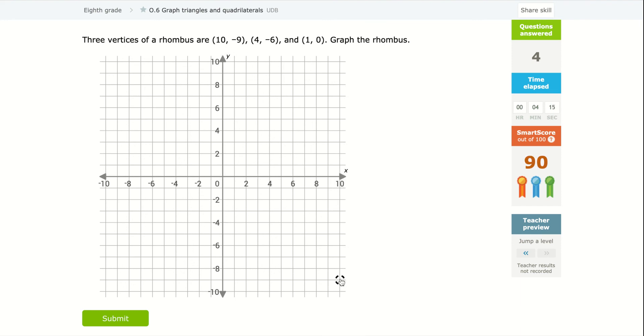(10, -9). So 10 down to negative nine. I got (4, -6). I'm going to go out four down to negative six. Then I'm going to go to (1, 0). I'm going to go over one zero. Now this is supposed to be a rhombus.